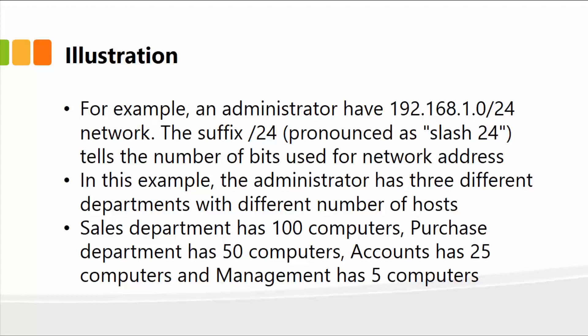In this example, the admin has three different departments with different numbers of hosts. The sales department has 100 computers, the purchase department has 50 computers, the accounts department has 25 computers, and the management department has only five computers. We are going to divide our IP address 192.168.1.0/24 — which tells us the number of bits used for the network address — into each of these departments: sales 100, purchase 50, accounts 25, and management 5.